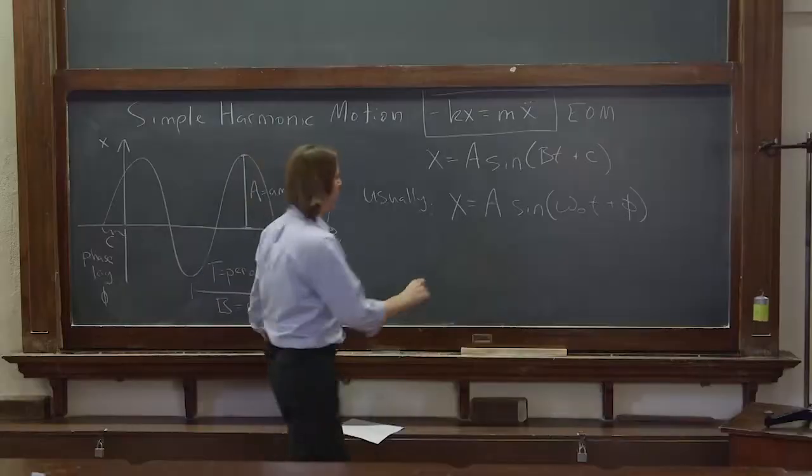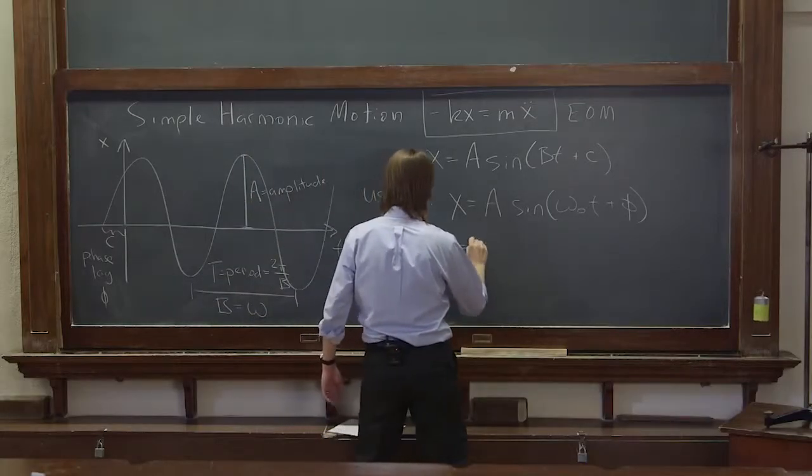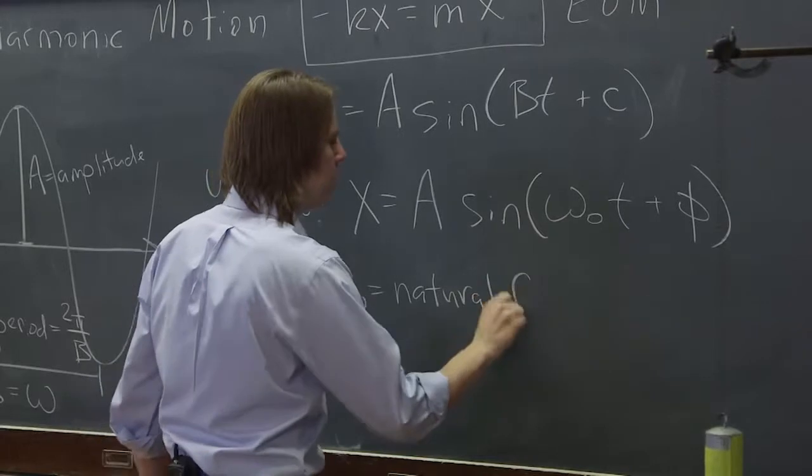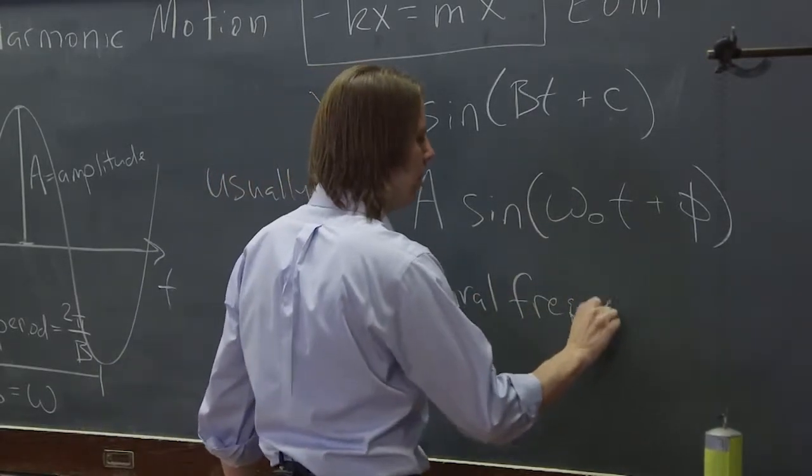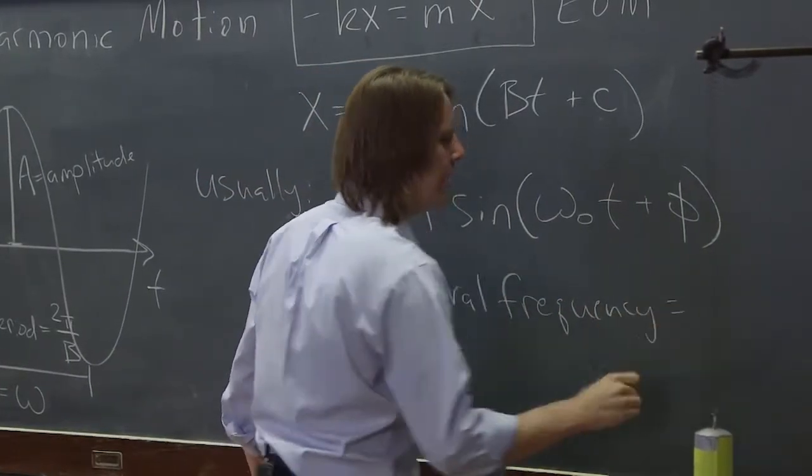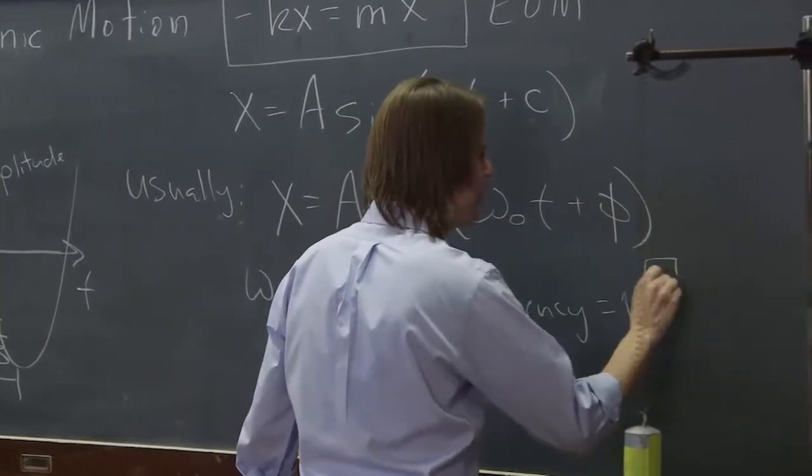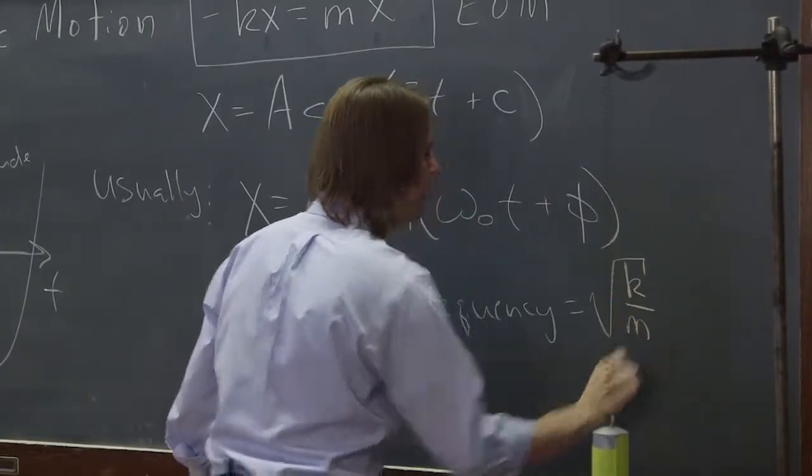Where omega 0 is the natural frequency. That's the thing that the equation of motion told us B has to be, square root of k over m.